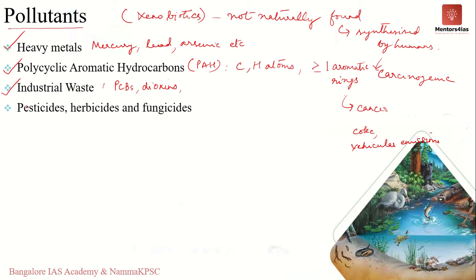One of the biggest causes of soil pollution is agriculture, where pesticides, herbicides, fungicides, and insecticides are used indiscriminately. When used in excess they enter the soil, reduce soil productivity, and lead to soil pollution. Once these chemicals enter the food system, they can result in biomagnification across the food chain, eventually harming human beings as well.